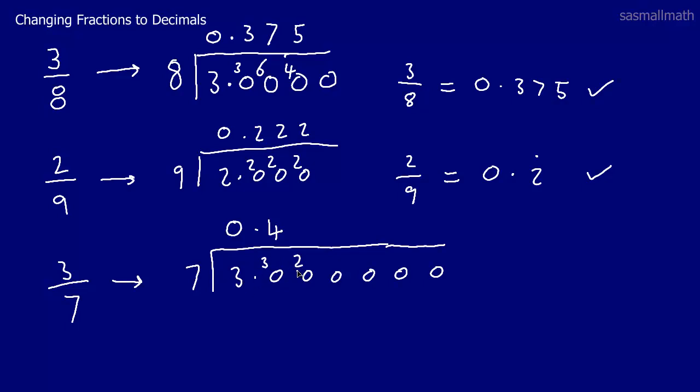I go 7 into 20. The closest is 14 which is twice. 14 from 20 leaves us 6. Put the 6 there. 7s into 60. Well 8 7s is 56. Put the 8 there.